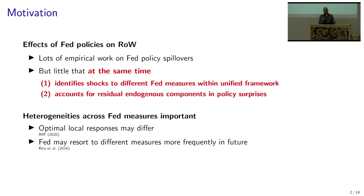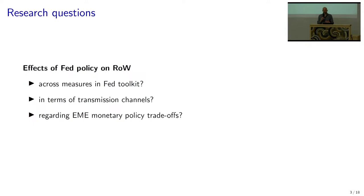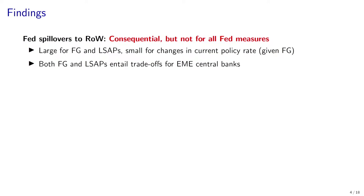Looking at these different measures and their spillovers to the rest of the world is important for at least two reasons. One, the optimal local policy response may differ depending on what the Fed is doing and how these measures transmit to the rest of the world. Another reason is that there may be more recourse to unconventional measures in the future if the zero lower bound happens to bind more frequently. Concretely, we look at spillovers to the rest of the world across the measures in the Fed's toolkit, try to tease out which transmission channels are at play, and look at possible trade-offs especially in emerging markets.